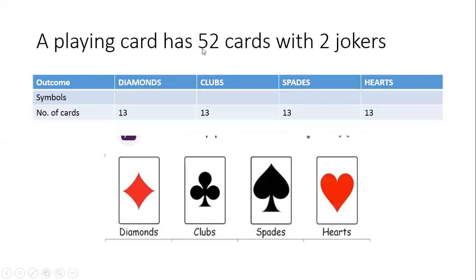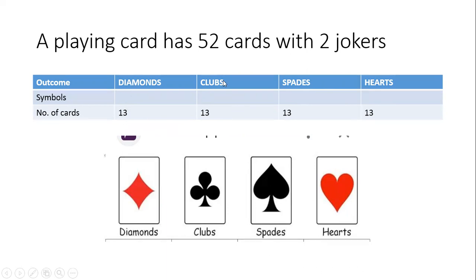Now let's talk about playing cards in detail. Each suit — diamonds, clubs, spades, and hearts — has 13 cards: an ace (number 1), then 2 through 9, then a jack, a queen, and a king. So there are 13 diamonds, 13 clubs, 13 spades, and 13 hearts, giving a total of 52 cards in the pack.